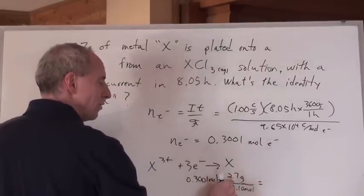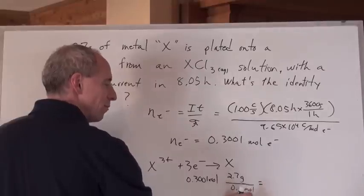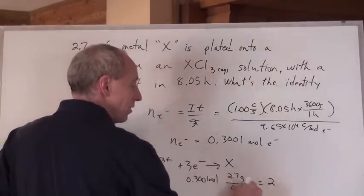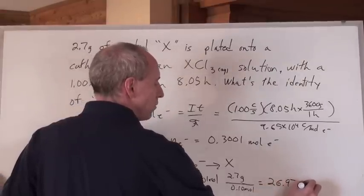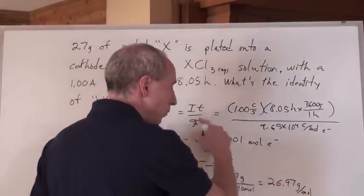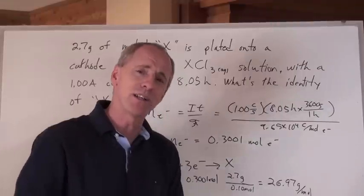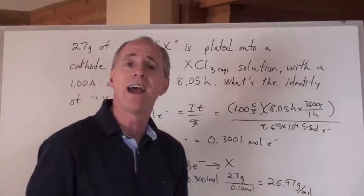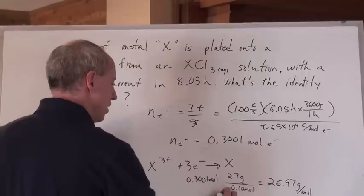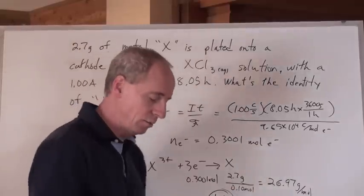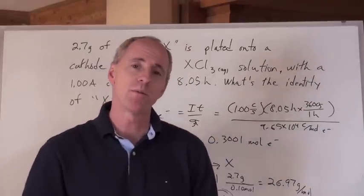Guess what? 2.7 grams divided by moles is grams per mole and that's the molar mass. It actually comes out to equaling about 26.97 grams per mole or something like that in your calculator when you keep all your numbers. That's pretty close to 26.98 and that means X equals aluminum because aluminum is 26.98 grams per mole.